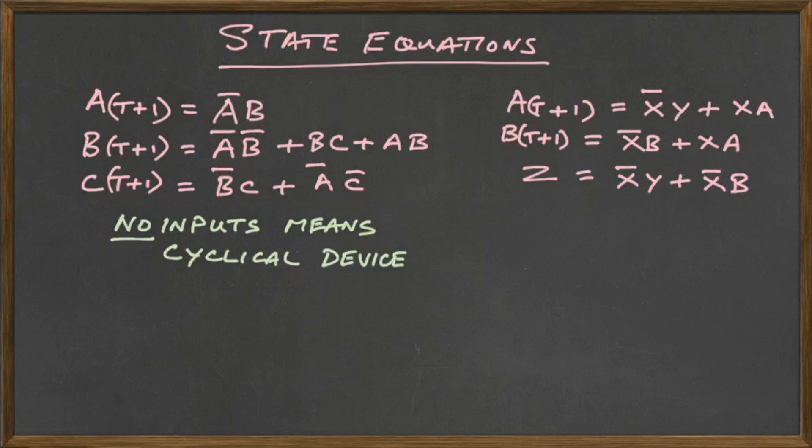Well look at it carefully and you will see that A, B and C are on the left hand side, three equations, one for A, one for B and one for C, and the only thing that appears on the right hand side of the equal sign is the letters A, B and C. So because it has no inputs it is going to be a cyclical device.